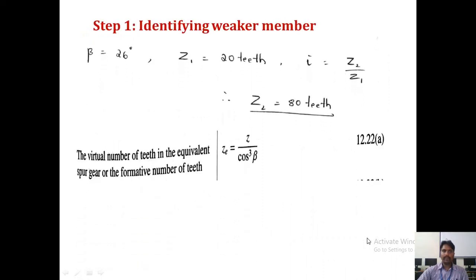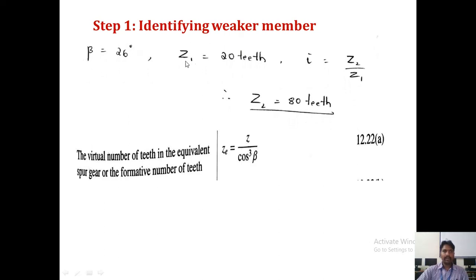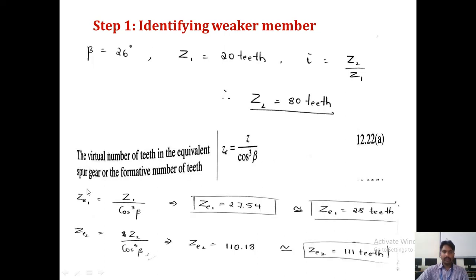Step 1: Identify the weaker member. Beta and Z1 = 20 teeth are given. Using I = Z2/Z1, we get Z2 = 4 × 20 = 80 teeth. Now calculate the equivalent (formative) number of teeth using Z_e = Z / cos³(beta). For the pinion: Z1_e = 25.74, rounded to 28 teeth. For the gear: Z2_e = 110.18, rounded to 111 teeth.